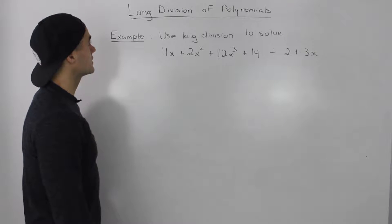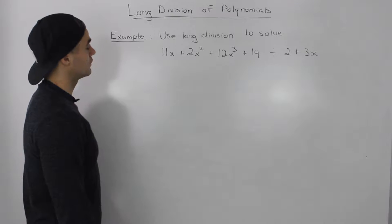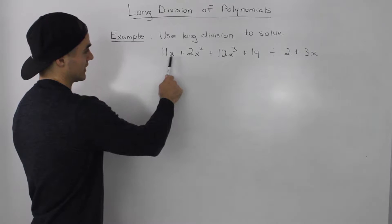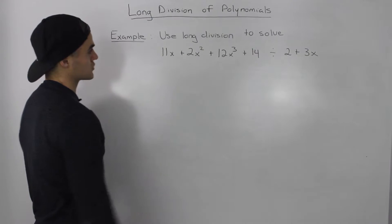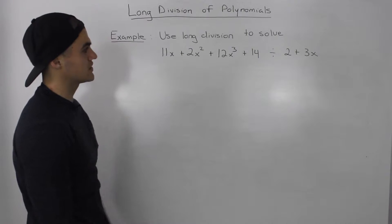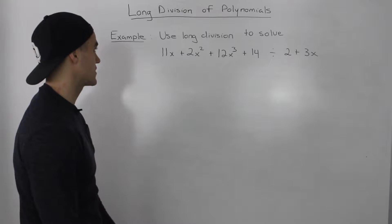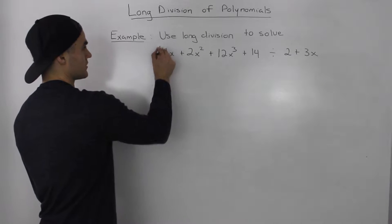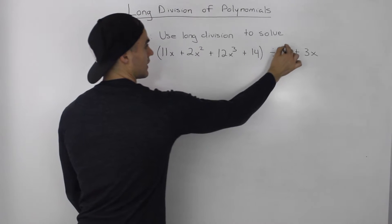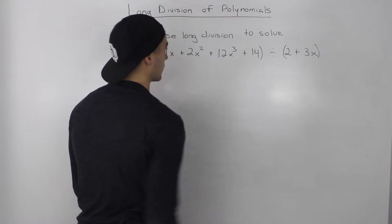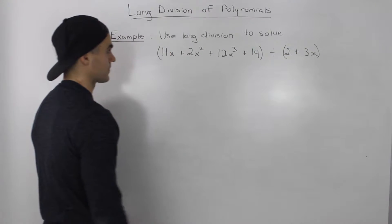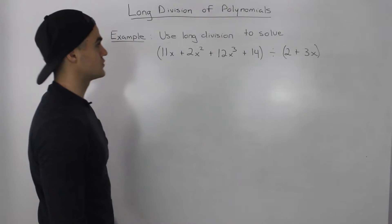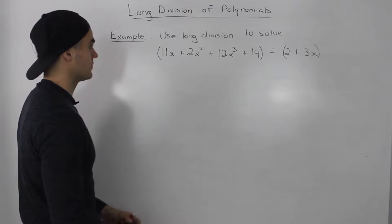Moving on to an example for the long division of polynomials, we have to use long division to solve 11x plus 2x squared plus 12x cubed plus 14, divided by 2 plus 3x. This here is our dividend and this here is our divisor. If you haven't watched the long division overview video, I suggest you do that before going over this example.